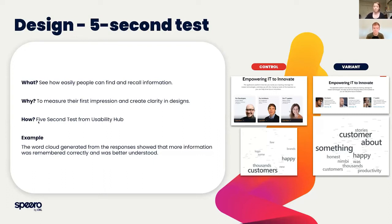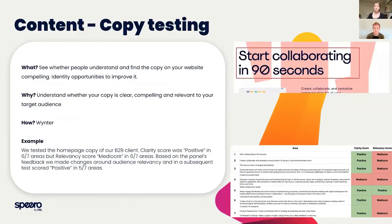That example of variations is a good one for both design and content. It's very easy to decide you want to test three or four different messages, but if you're doing that as a multivariate test you need longer time, more traffic, and it can take longer to get results. In the copy testing example here, we focused purely on the headline to understand whether it makes sense and is relevant — and that's what the table shows: both a clarity score and a relevancy score.